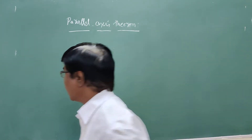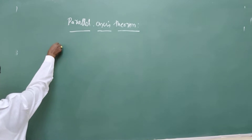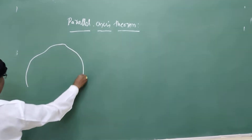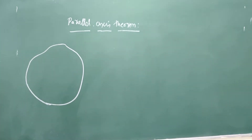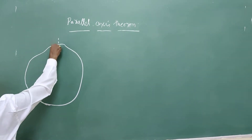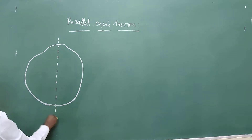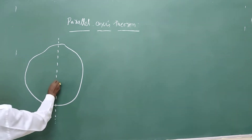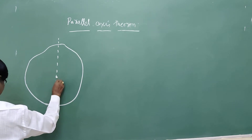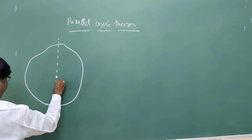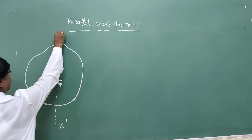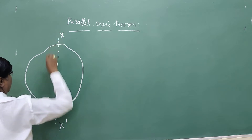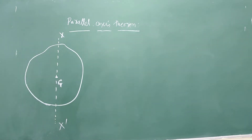Let us consider a body — a lamina like this. This is the centre of gravity, G. And this is X, X-dash — the axis at the centre of gravity.